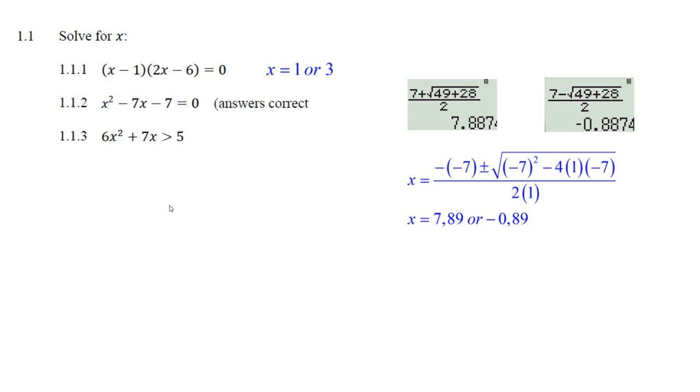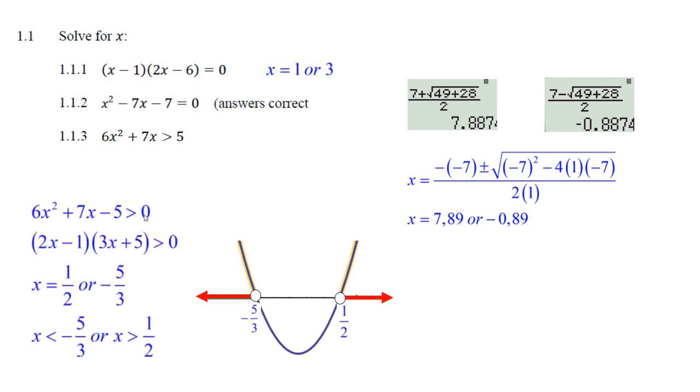Now, the next question - people always get the first part right. They put it in standard form, and then they either factor it or use the formula to make sure they get the roots here. What makes it equal to 0, which is 1 half or minus 5 thirds. You can see that it multiplies out: 2x times 3x is 6x squared, plus 10x minus 3x gives you the plus 7x.